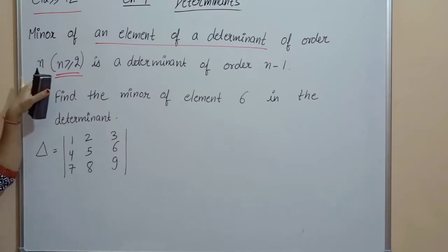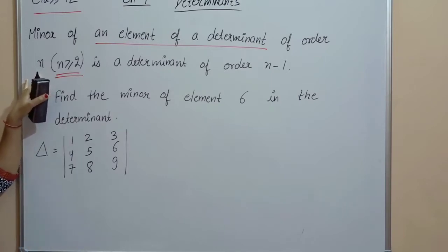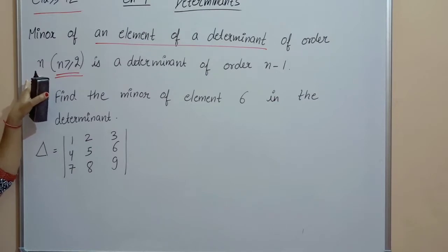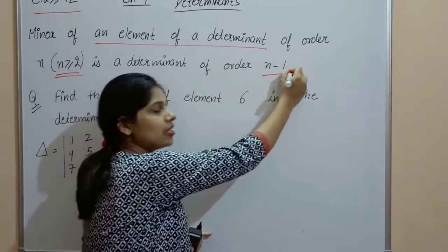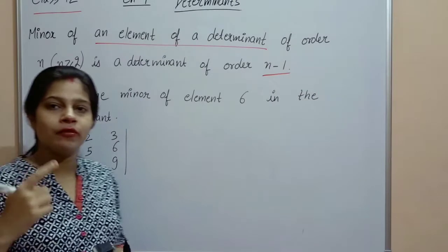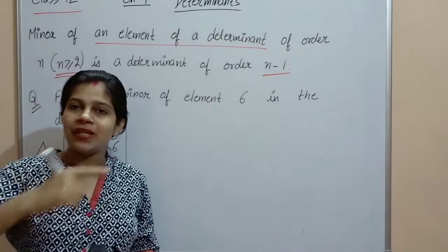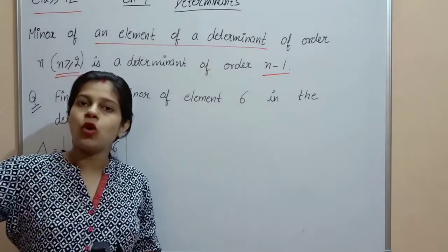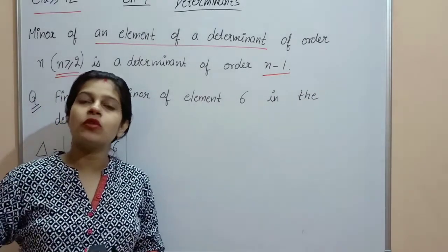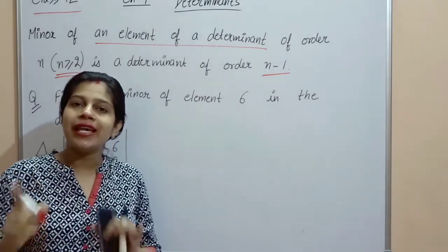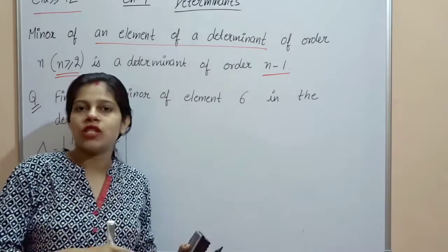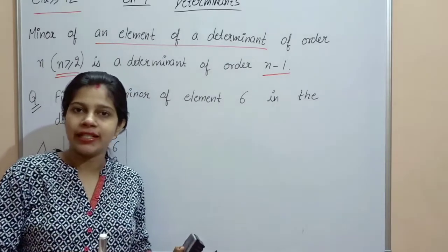So if the order of the determinant is n, and you find the minor of any element, its order will be n−1, because we delete the element's i-th row and j-th column. So the order decreases by one.